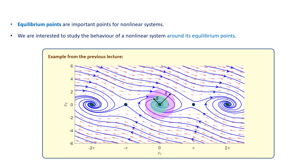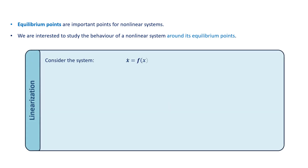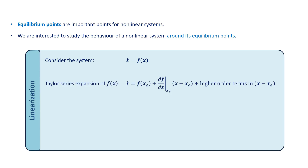Consider a nonlinear system x dot equals f of x. The Taylor series expansion of f of x around the equilibrium point x_e is: x dot equals f of x_e plus the partial of f with respect to x at x_e, times x minus x_e, plus higher order terms which are all functions of x minus x_e. For example, if x is a scalar, then the higher order terms include x minus x_e squared, x minus x_e cubed, and so on.